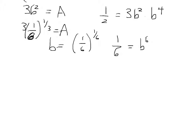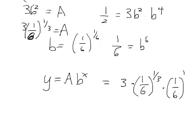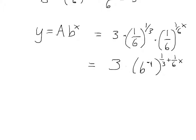Which means that the best way to write this equation, Y equals A, B to the X, is like this, 3 times 1 sixth to the 1 third, times 1 sixth to the 1 sixth to the X. Okay. This is not how you want to write it. You want to write it like this. You want to write it as 3 times, I'm going to write 6 to the minus 1 for 1 sixth. Okay. And then 1 third plus 1 sixth X. Okay.